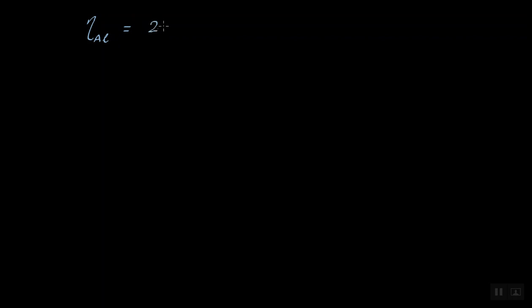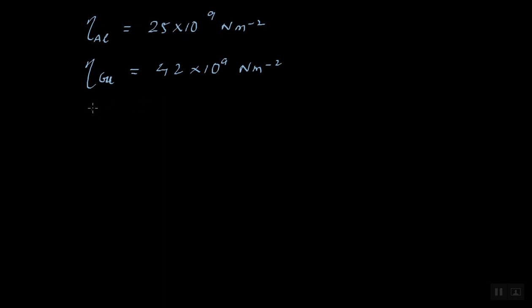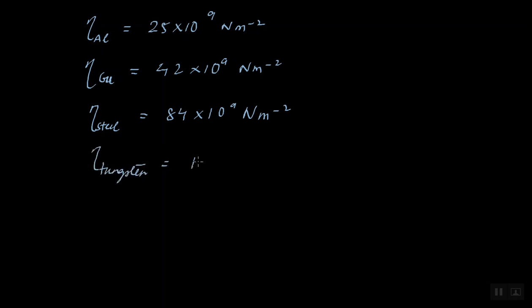Values of the modulus of rigidity: for aluminium, η ≈ 25 × 10⁹ N/m²; for copper, η ≈ 42 × 10⁹ N/m²; for steel, η ≈ 84 × 10⁹ N/m²; for tungsten, η ≈ 150 × 10⁹ N/m². Those are the three different moduli of elasticity, and you have to learn them well.